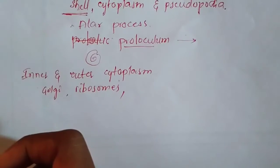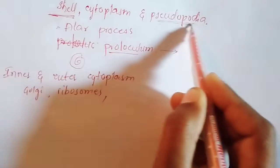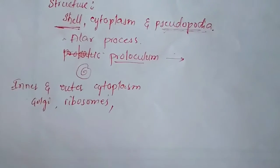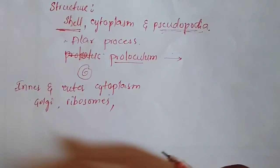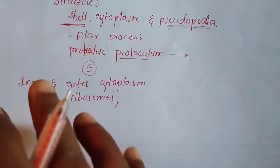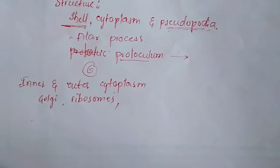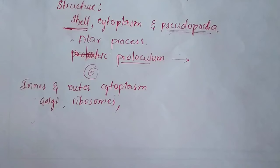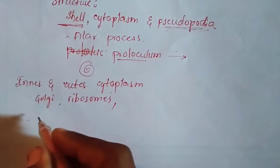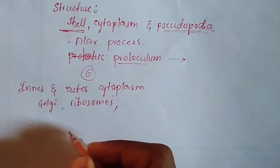Pseudopodia are the locomotory structures responsible for locomotion. Pseudopodia can be divided into four types: lobopodia, filopodia, reticulopodia, and axopodia. In Elphidium, the pseudopodia are of the reticulopodia type, also called myxopodia, which help the organism in capturing food and in locomotion.